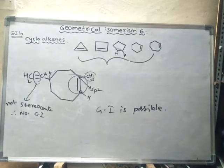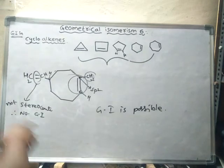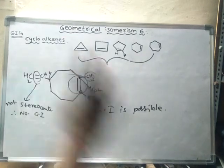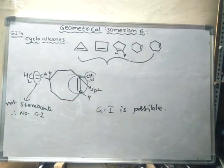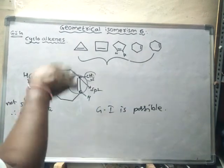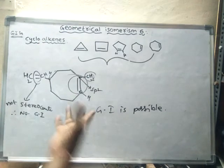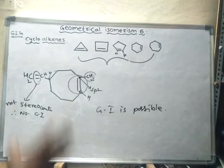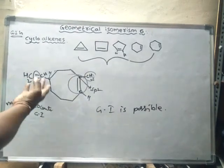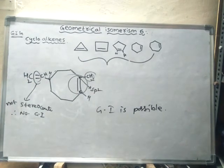Geometrical isomerism is possible in this compound because the cycloalkene has 8 carbons in the ring, making it a stereocenter. Hence the compound shows geometrical isomerism due to the cycloalkene portion only.